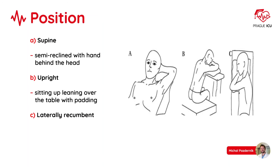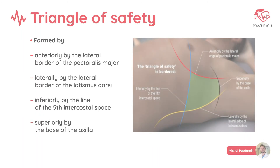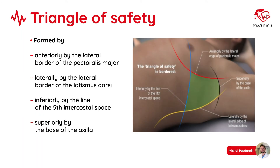The procedure can be performed in different positions depending on patient status. The most frequently used position is upright, but you can also do the drainage in supine or laterally recumbent positions. In acute scenarios or in patients with limited mobility, such as ventilated patients or patients on ECMO, you should be familiar with the triangle of safety drainage. This approach minimizes the risk to blood vessels, muscle and breast tissue.